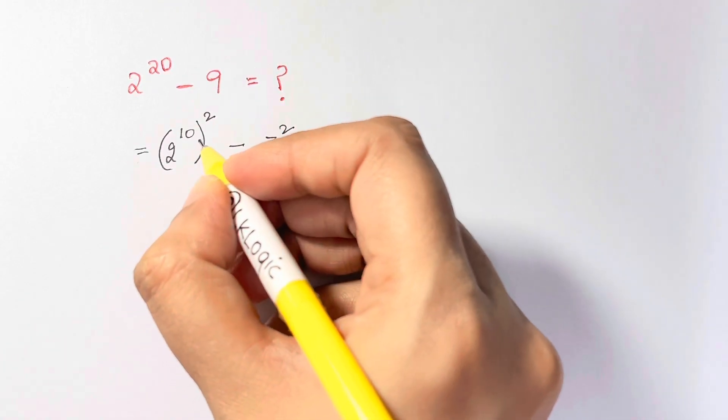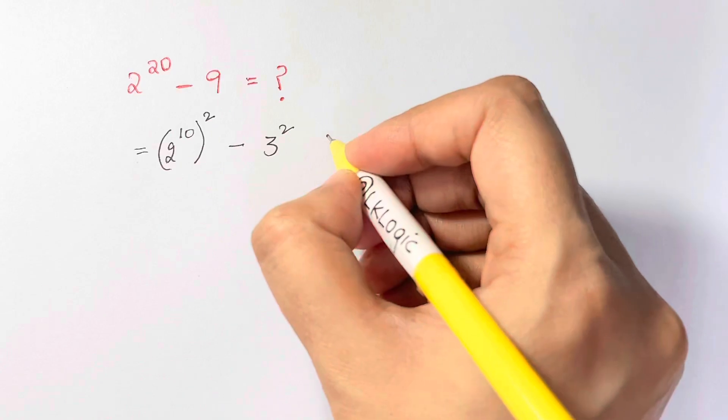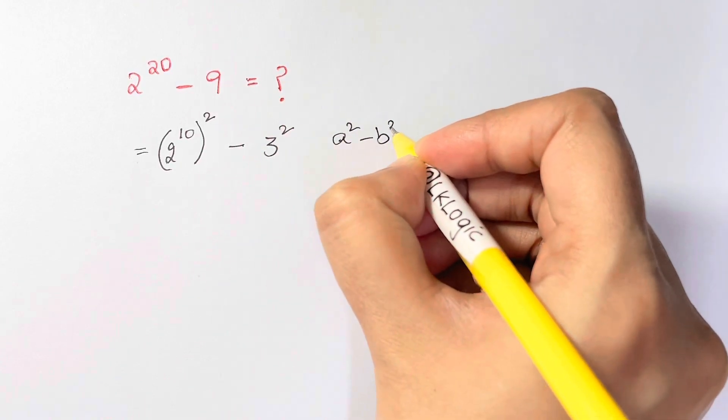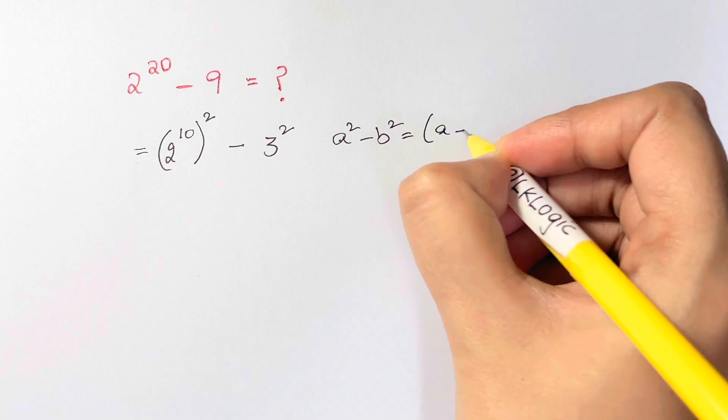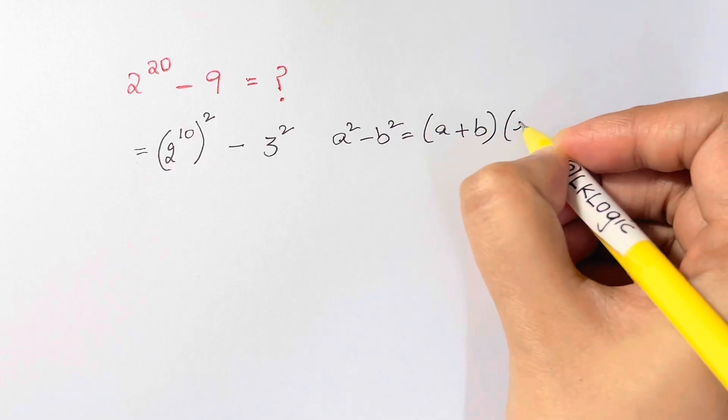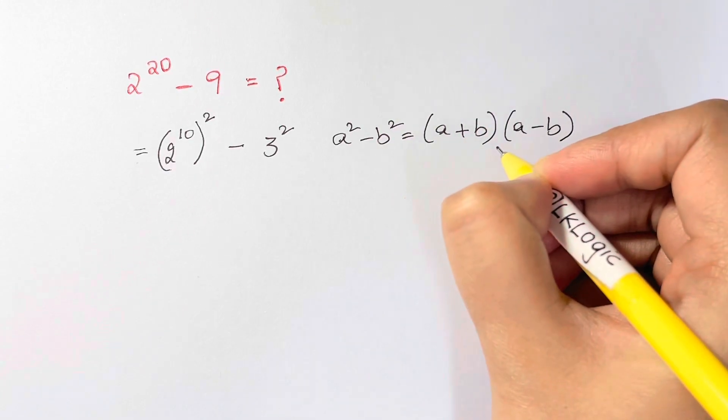Now if you see, you have square, you have square. This is an identity: a square minus b square, which is equal to a plus b times a minus b.